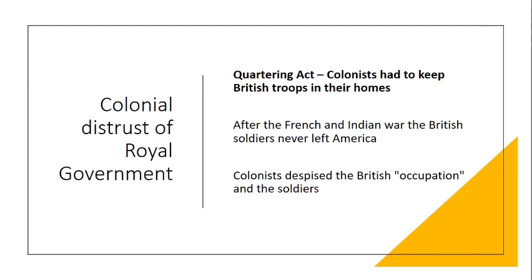One of the big things was the Quartering Act. After the French and Indian War, all the British soldiers sent to America didn't go home — it was expensive to ship them back, and the king wanted them there to keep American colonists in line. Since there weren't barracks all over America, the king passed a law requiring American colonists to keep British troops in their own homes. Americans were outraged, having to house soldiers — many of whom were likely criminals who joined the army to get out of jail. The colonists despised this and considered it a British occupation, feeling it was a military army occupying their cities. It caused them to distrust the king and feel increasingly separate from the British government.